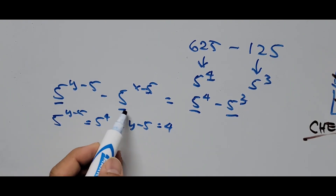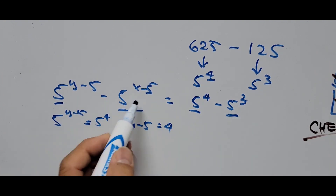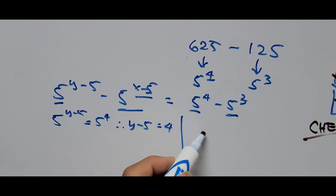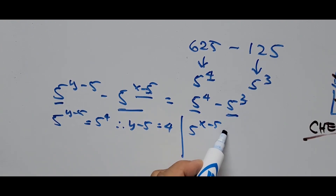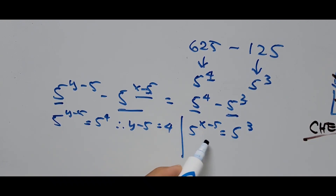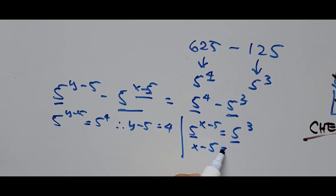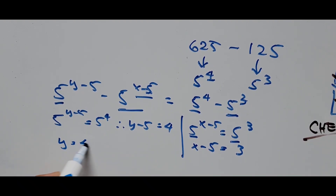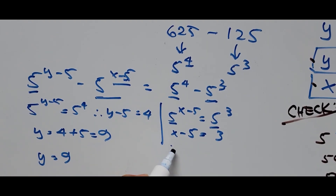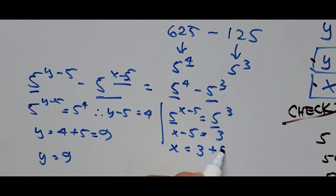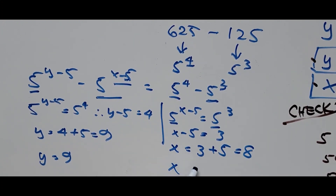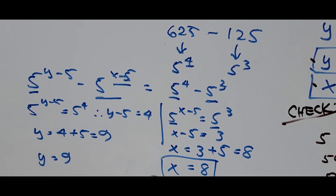Equating exponents: y minus 5 equals 4, so y equals 9. For the other term: 5^(x minus 5) equals 5^3, so x minus 5 equals 3, giving x equals 8. Therefore the third solution gives y equals 9 and x equals 8.